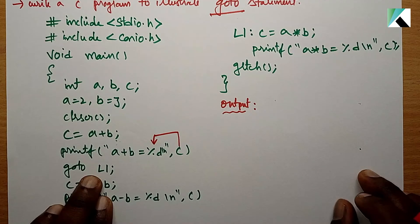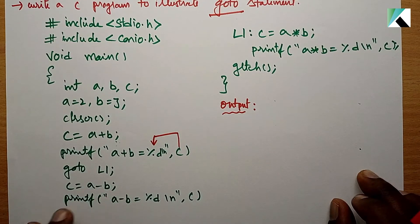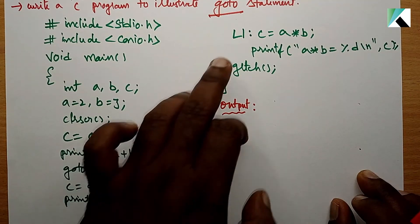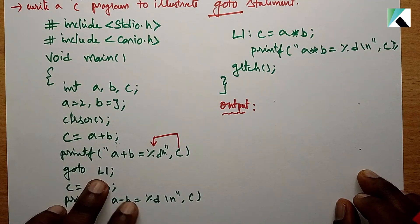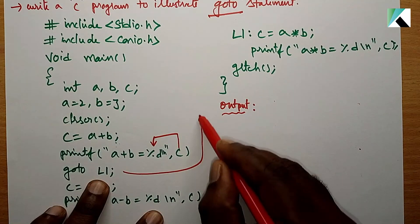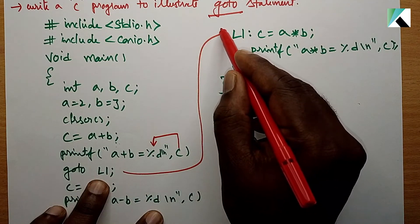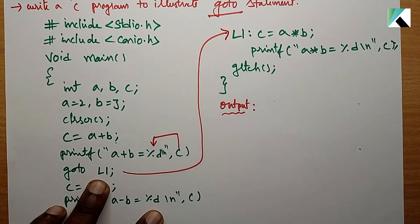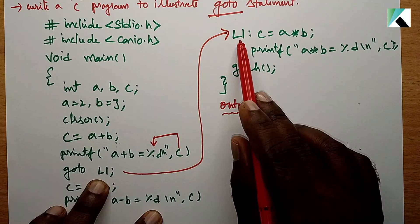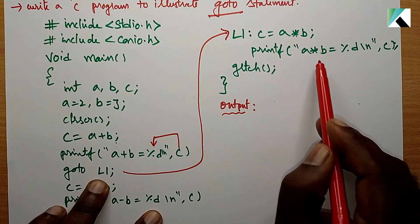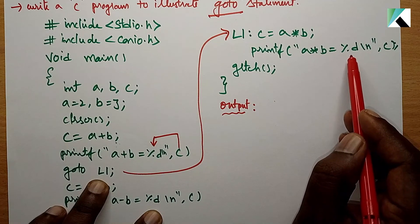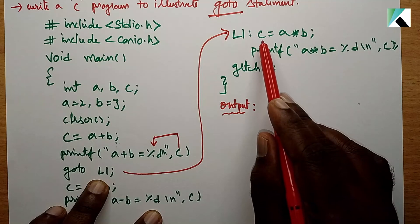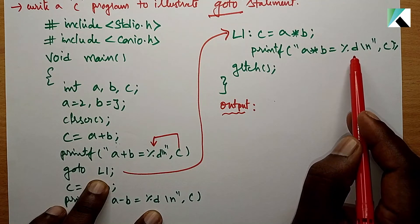At label L1, we write: C is equal to A into B (i.e., A multiplied by B), and then printf("A into B is equal to %d", C). So the result of the multiplication is printed from label L1.